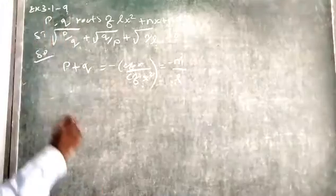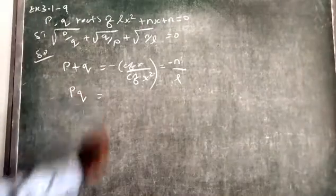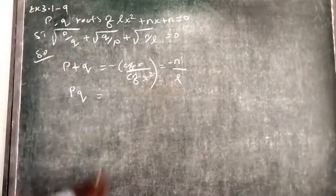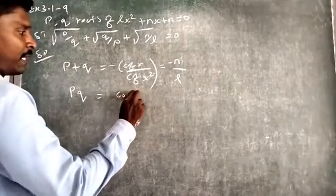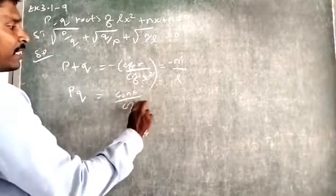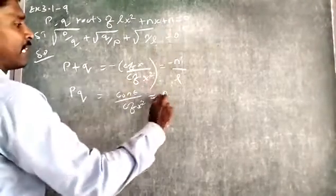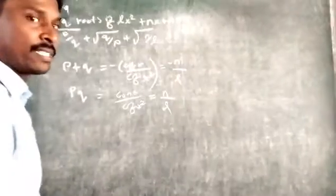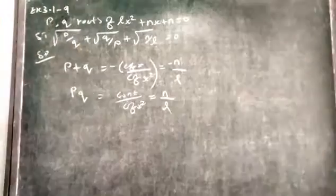Then, product of roots BQ. So, product of roots equals constant term by coefficient of X squared. Here, the constant term is N and the coefficient of X squared is L. So, BQ equals N by L.